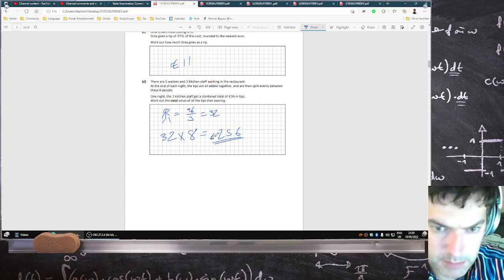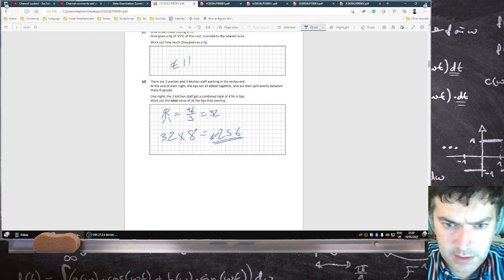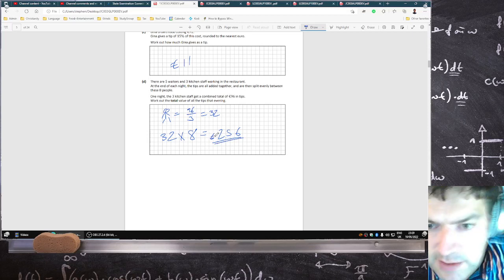So, 256 divided by 8 is 32 and 3 kitchen staff will be 96. Alright, that checks out.